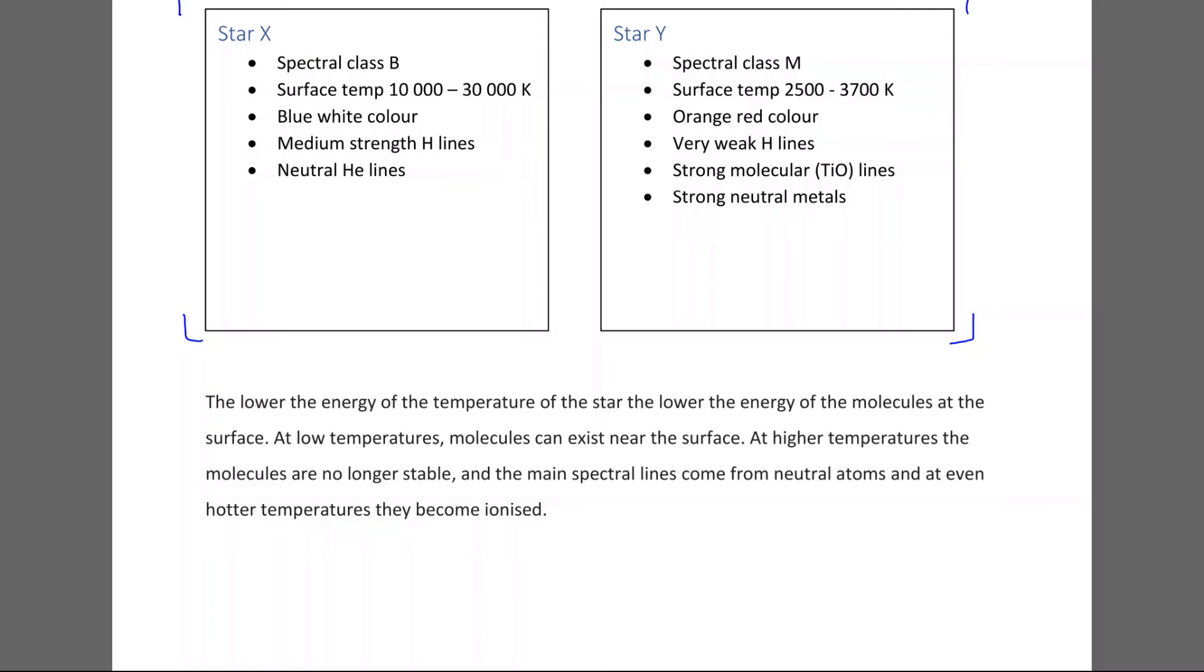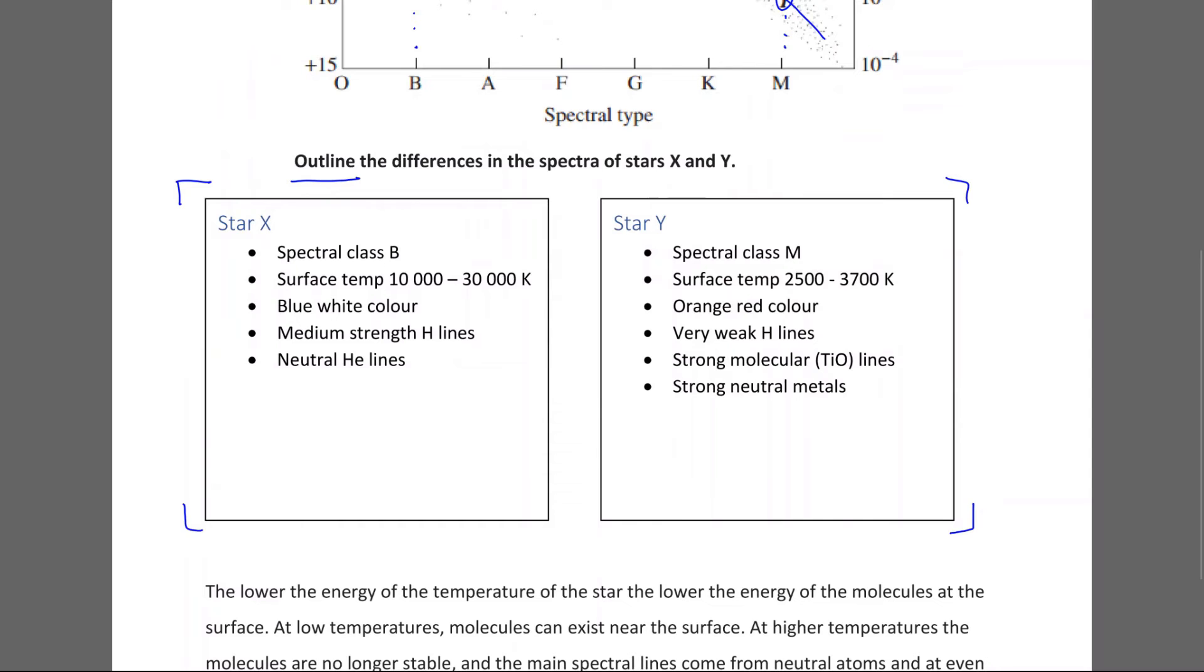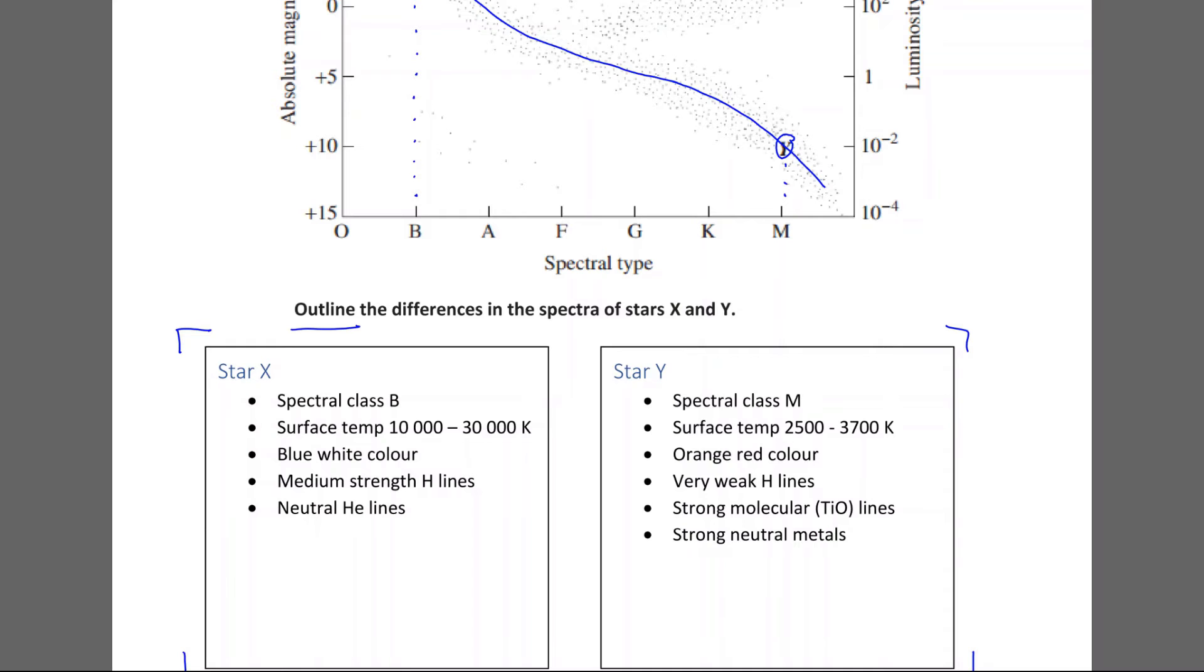However, as the temperature rises and the star gets a bit hotter, at high temperatures, the molecules are no longer stable and they break up. And the main spectral lines come from neutral atoms. So there's no longer molecules, we're just individual atoms. And as we get to even higher temperatures, those atoms become ionized. So they're no longer neutral. That's what's happening there. So star X is much hotter than star Y. And as a result, we see these medium strength hydrogen lines and neutral helium lines compared to the molecular lines for star Y.